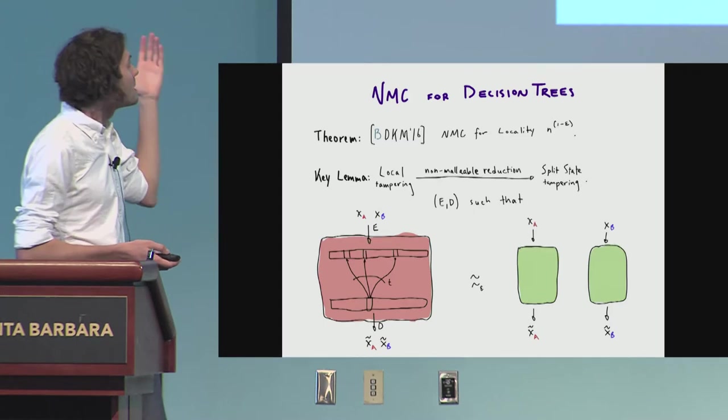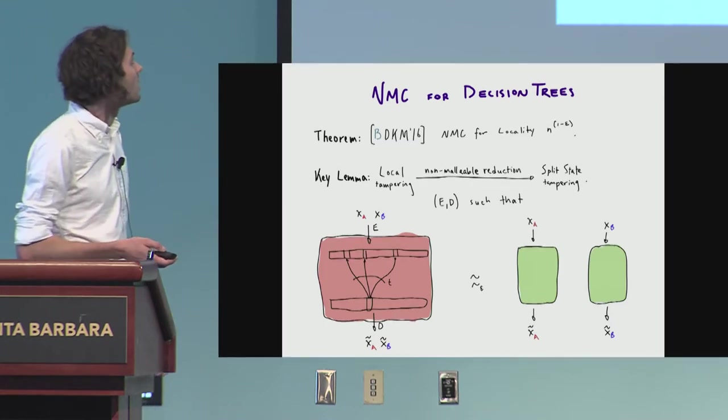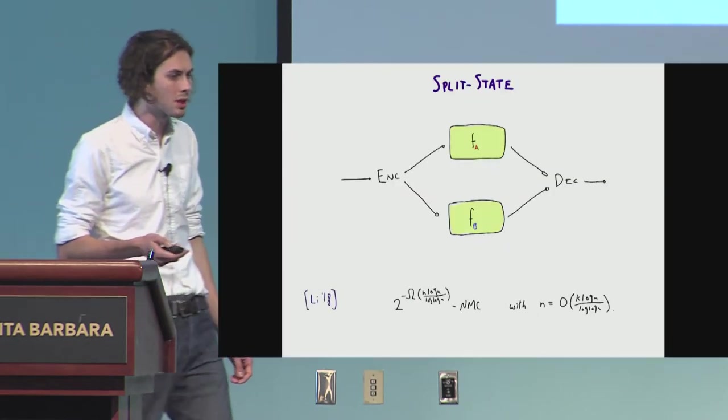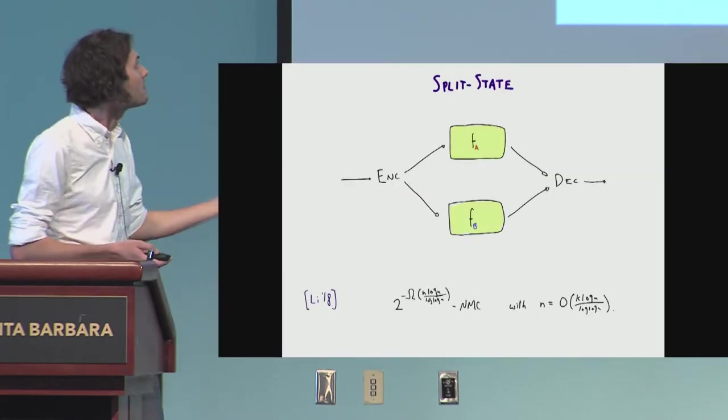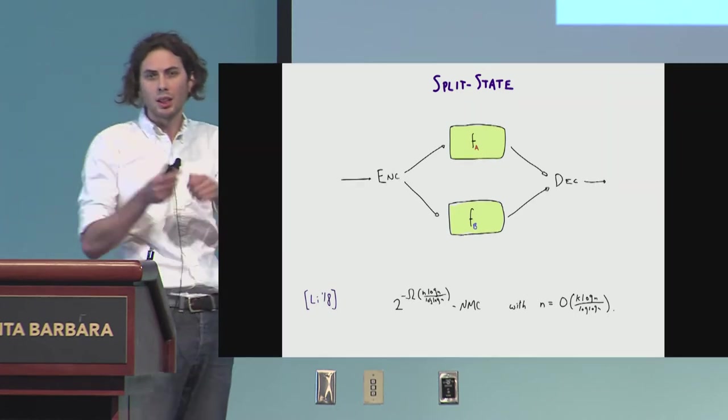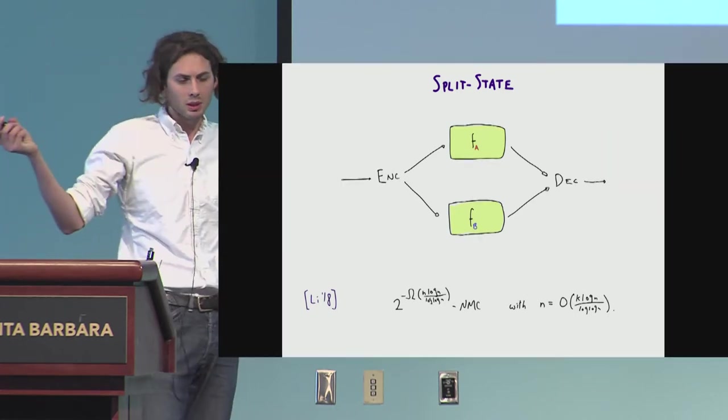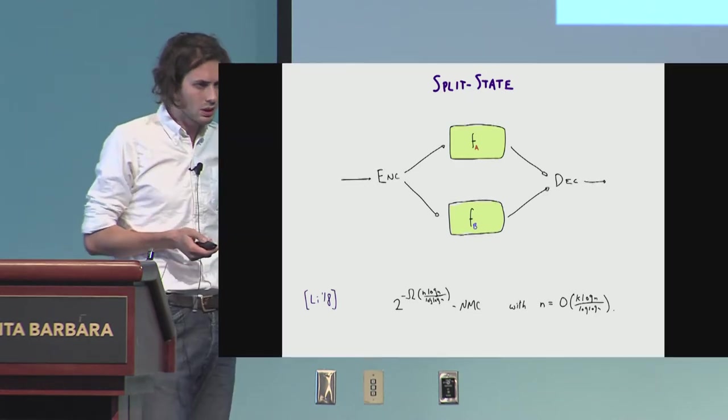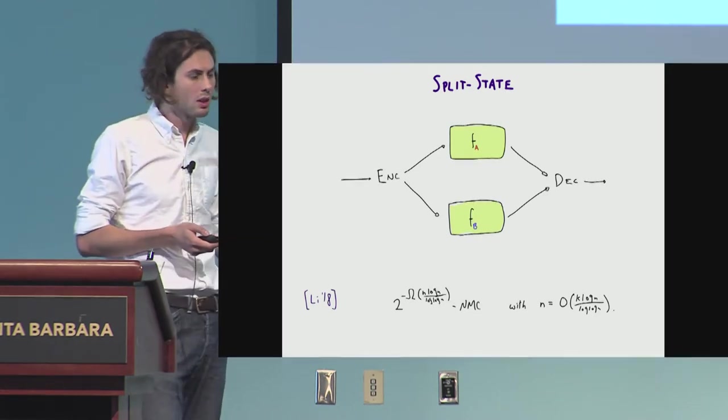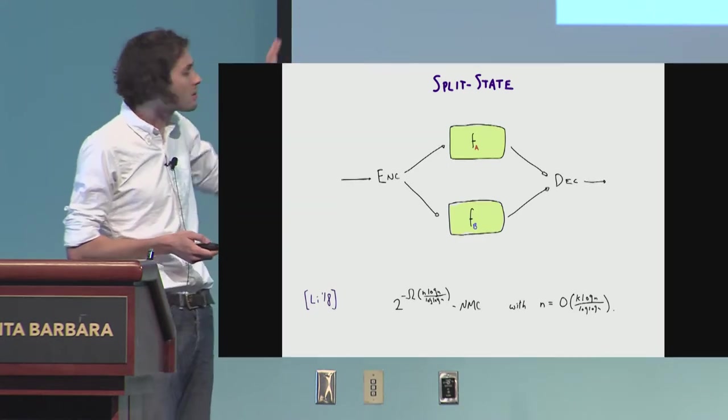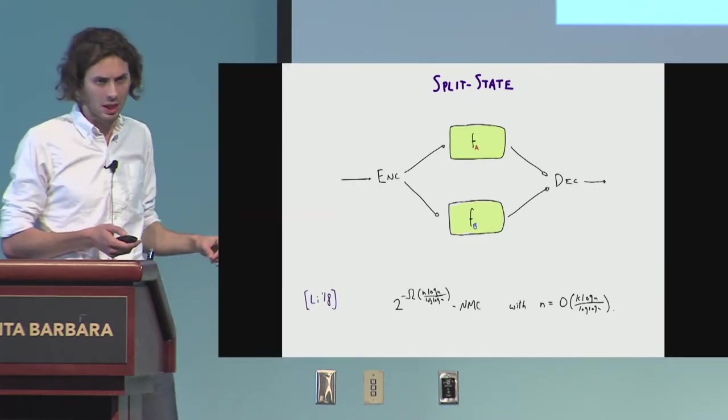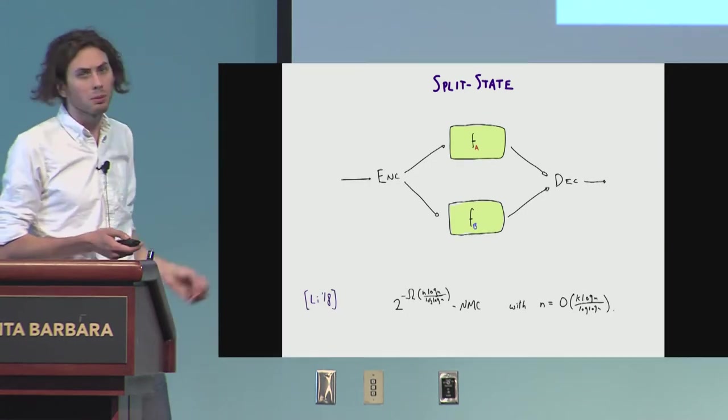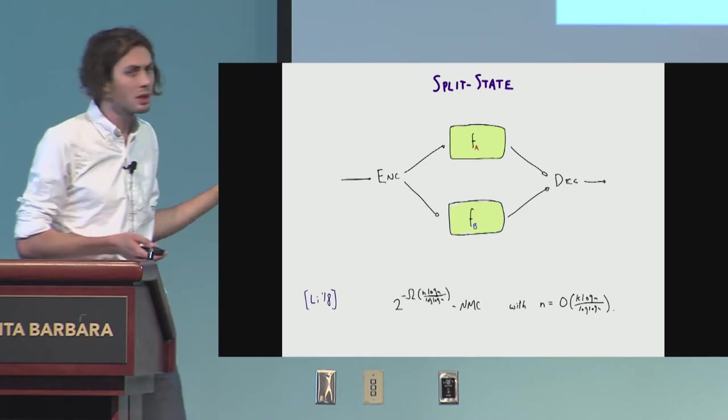And the key lemma is, again, a non-malleable reduction from local tampering to split-state tampering. So I should tell you what split-state tampering is. I've mentioned it a couple of times. So split-state tampering is like the output of your encoding gives you two code words, and you tamper with them completely independently, and then decode. So the split-state tampering is like this independent tampering, and there's very good codes.